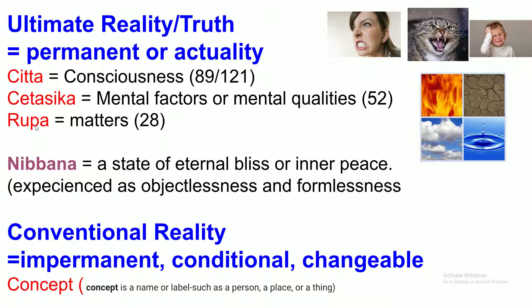Rupa, number three. It's we understand as matter, 28 matters. Four main types we should know: there are four elements - fire, earth, water and air elements.